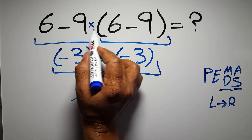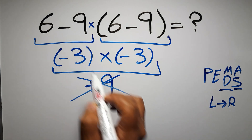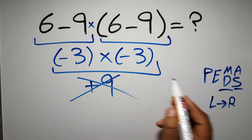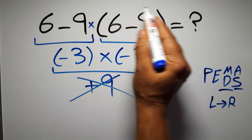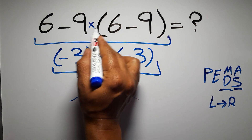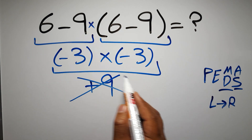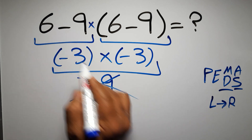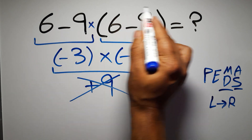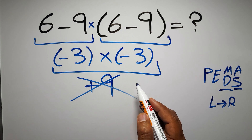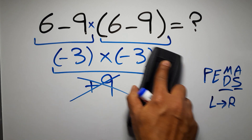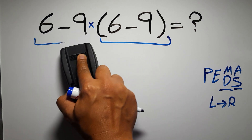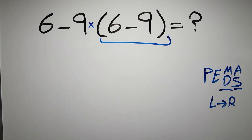We usually don't write the multiplication sign for brevity. So according to the order of operations, first we have to do this parentheses, then this multiplication, and finally this subtraction. If we do this subtraction before this multiplication or this parentheses, it is wrong.